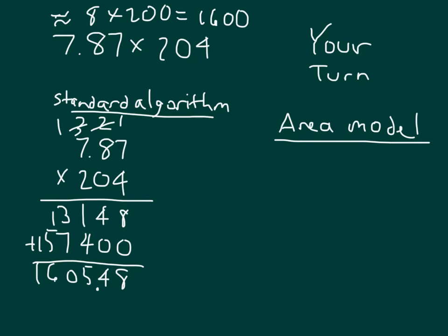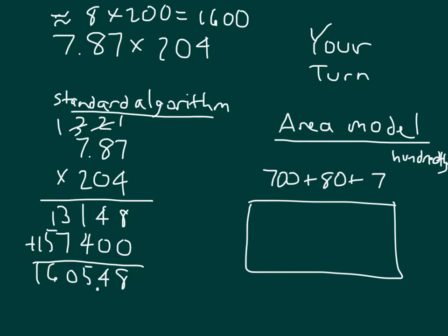In setting up my area model, I'll break down 787 to begin with. That breaks down into 70, 80, and 7. Remember, that's hundredths. And I'm multiplying by 204, which I'll break down into 4 plus 200.